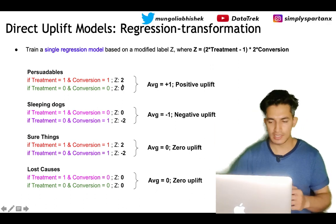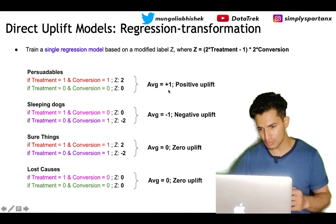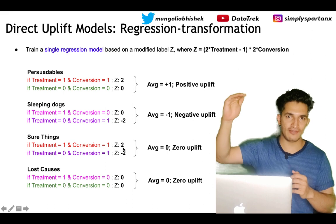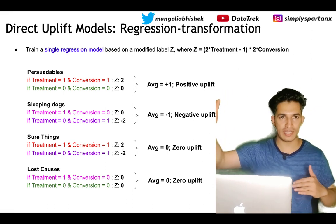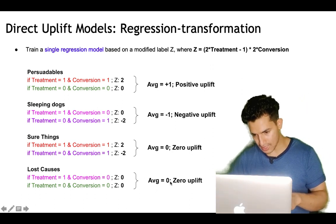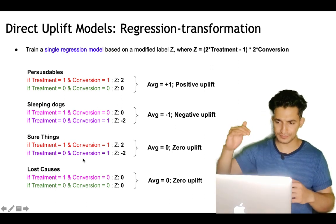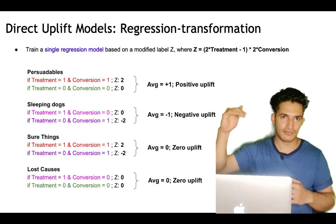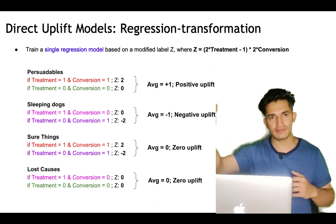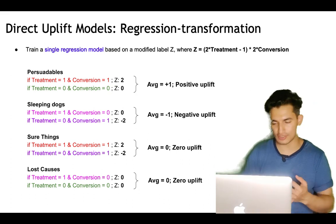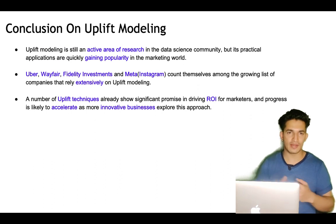Due to the averaging effect, persuadables settle at an average of +1 (positive uplift), sleeping dogs settle at −1 (negative uplift), sure things settle at 0 (zero uplift since 2 and −2 cancel), and lost causes settle at 0 (zero uplift). So once the Z variable is transformed in this way, the output gives the actual uplift: positive for persuadables, negative for sleeping dogs, and near zero for sure things and lost causes.